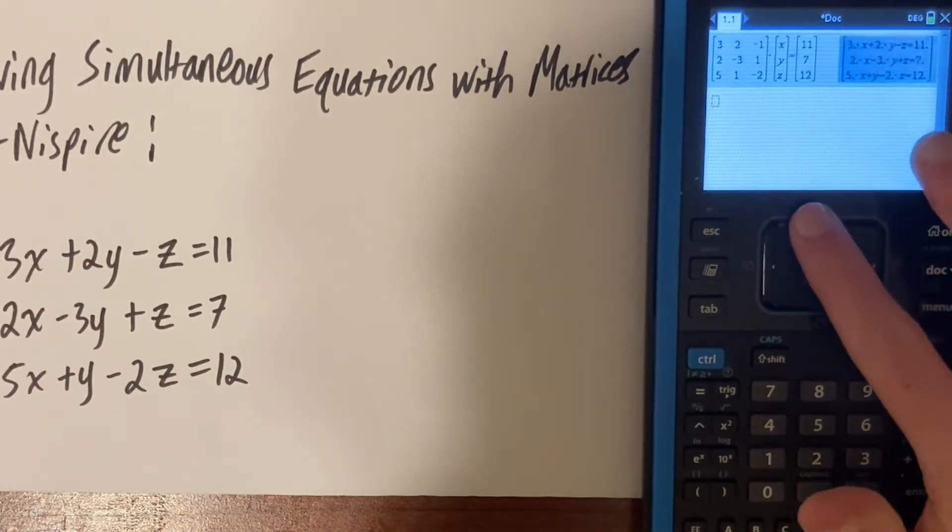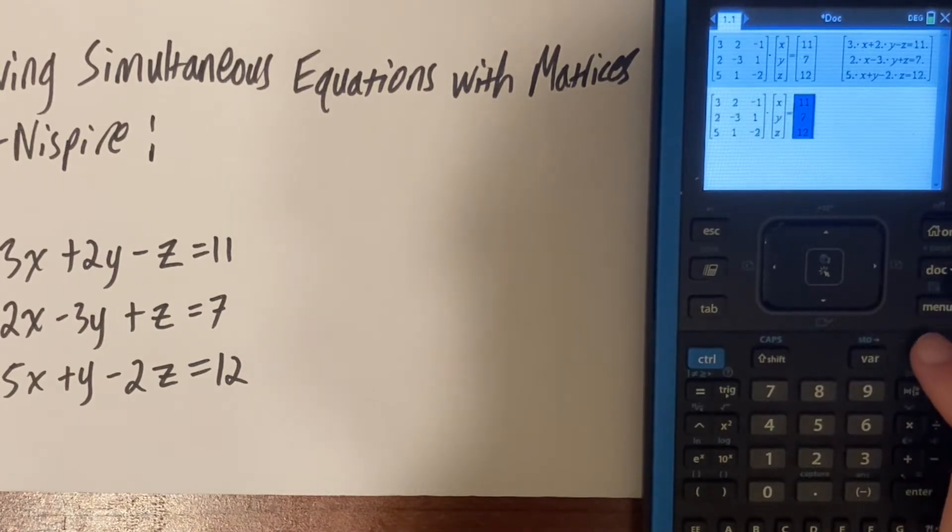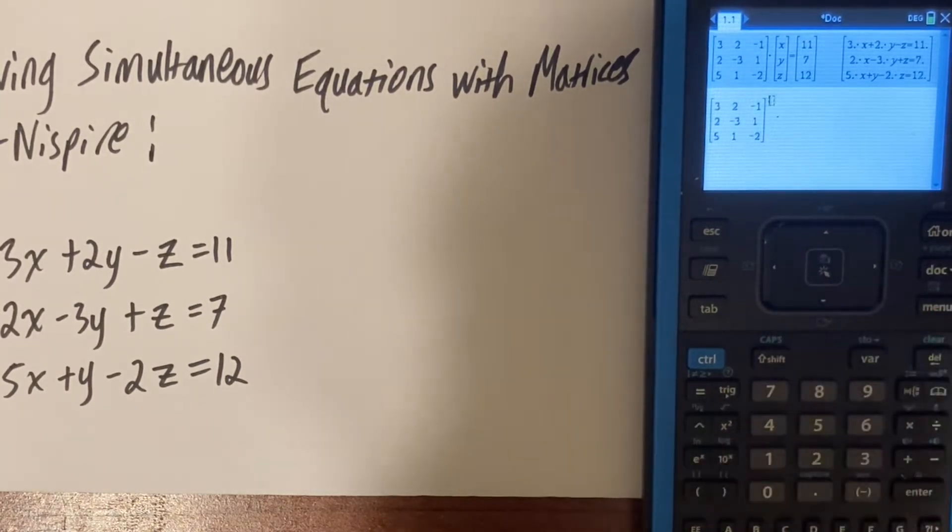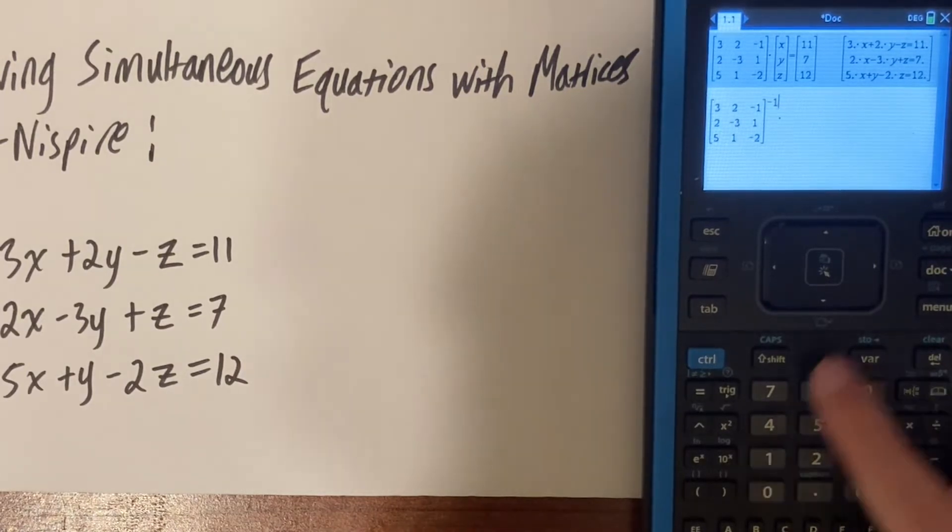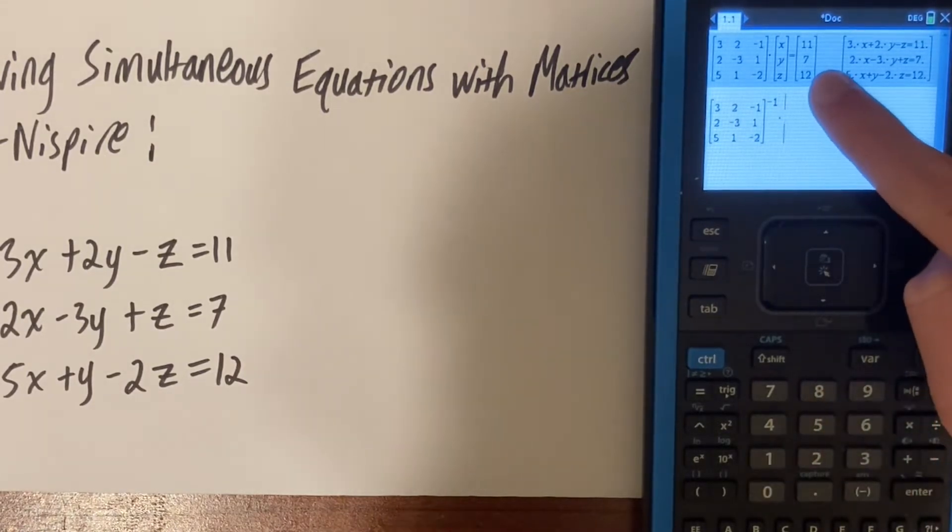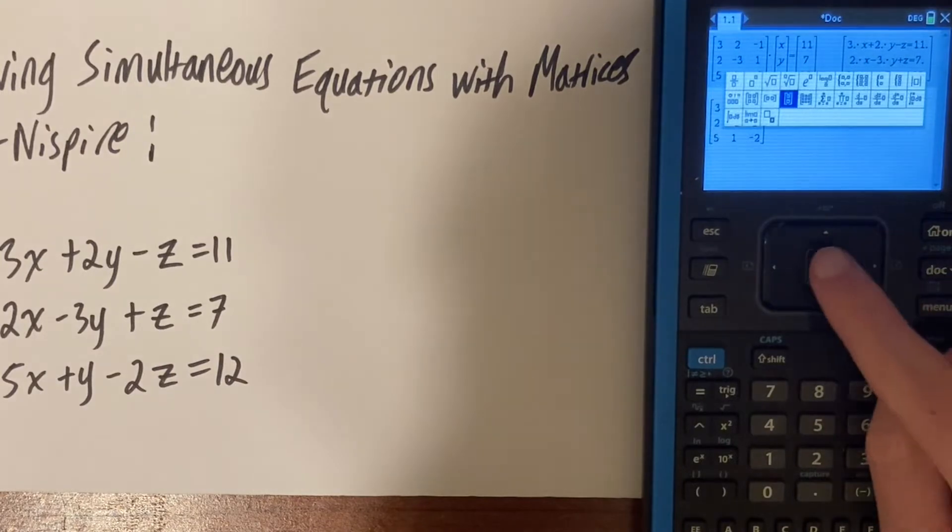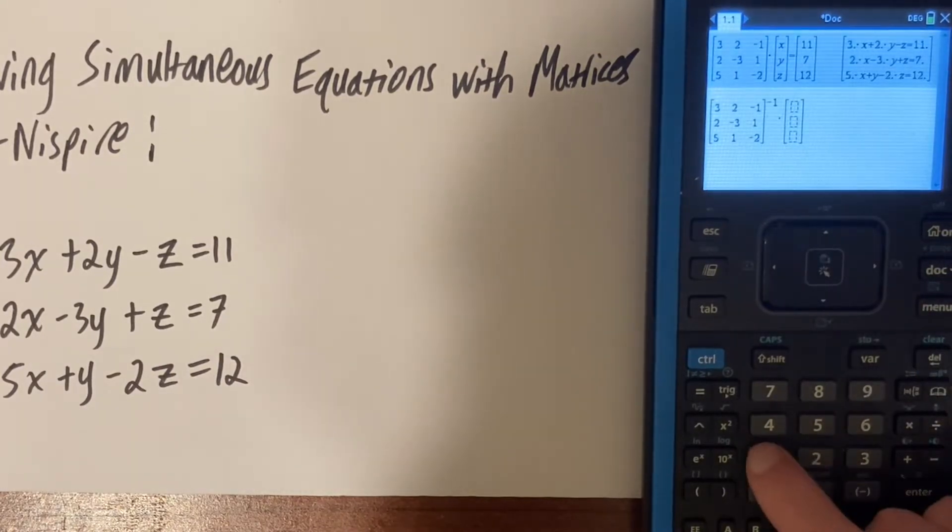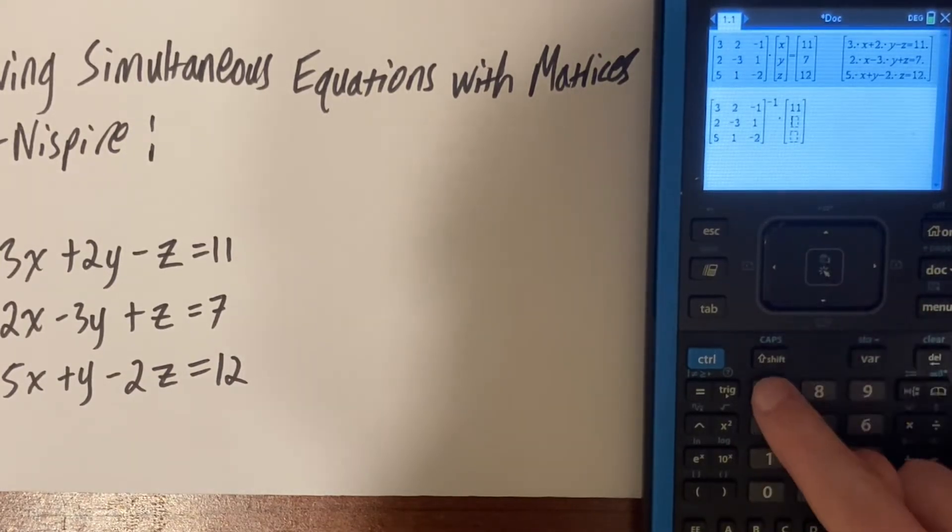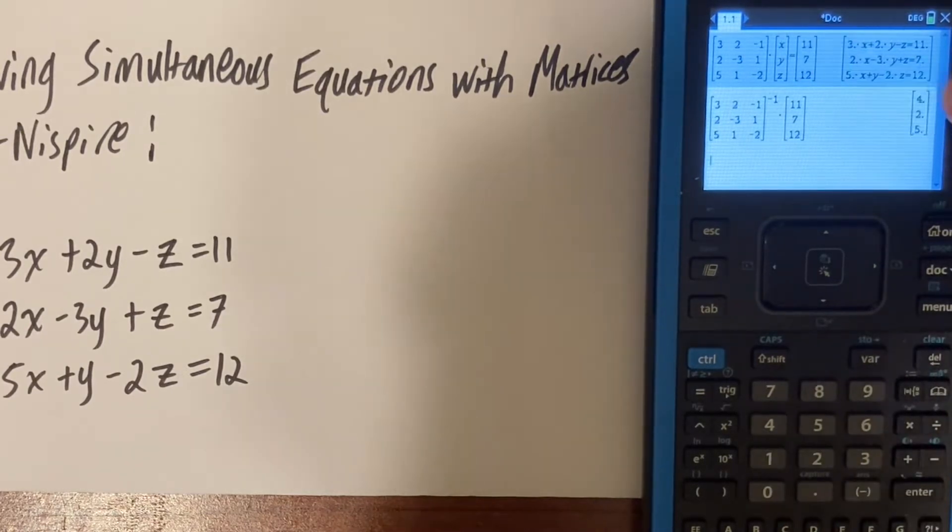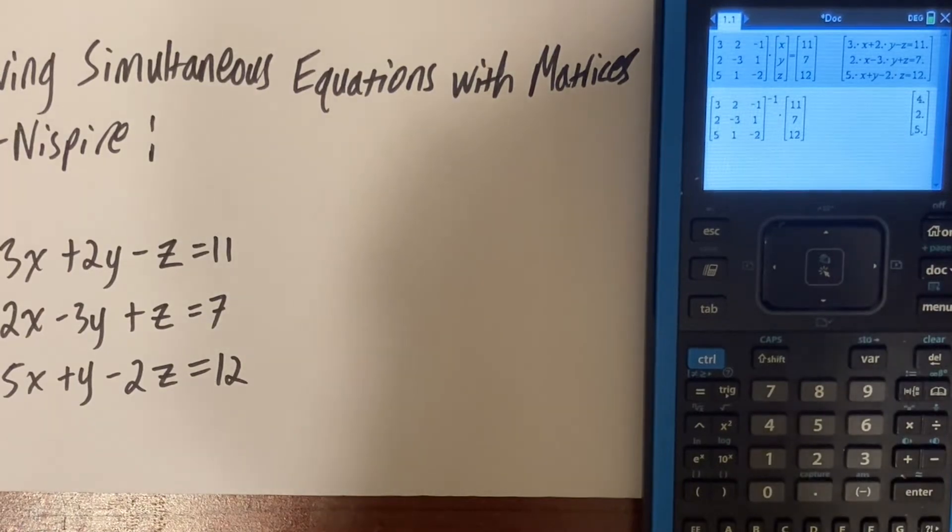We would use this first part of the equation, and we want to get x, y, and z and solve for that. If we take the inverse by multiplying this matrix by negative one, and then multiplying that by what's on the other side of the equation, because that's what the inverse does. Our answer to this simultaneous equation is x equals four, y equals two, and z equals five.